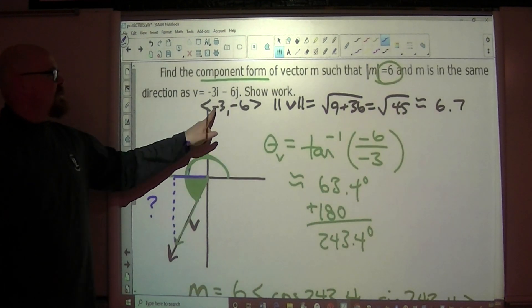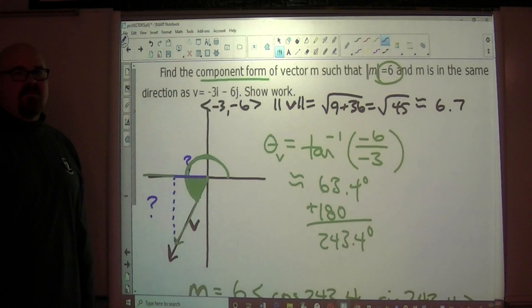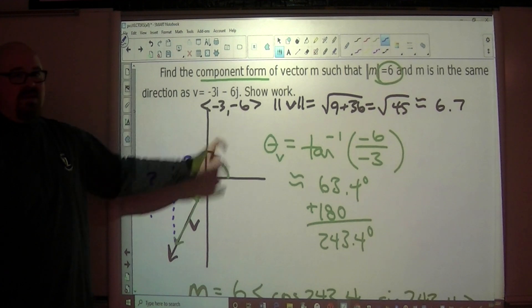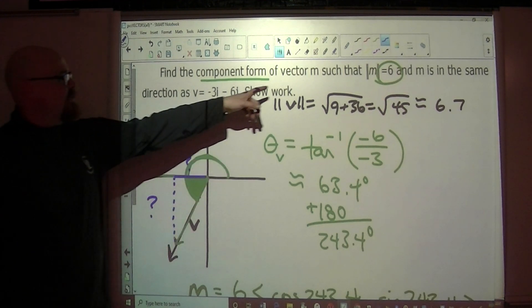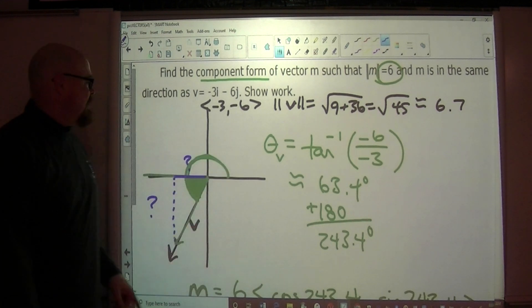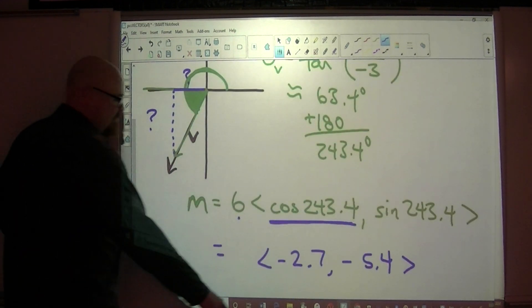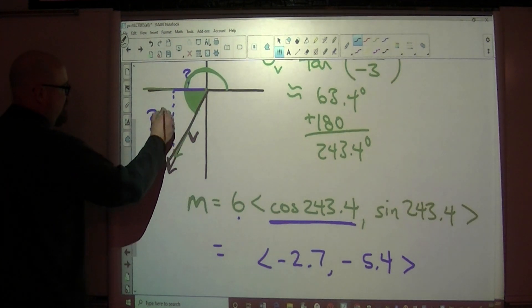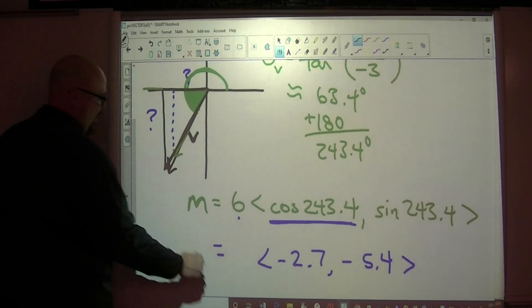Right, when you look at these two components, negative six is twice as big as negative three, is it not? In other words, this times two is that. If I have a vector that's traveling in the same direction as that, then what I'm forming here is I'm forming similar triangles.